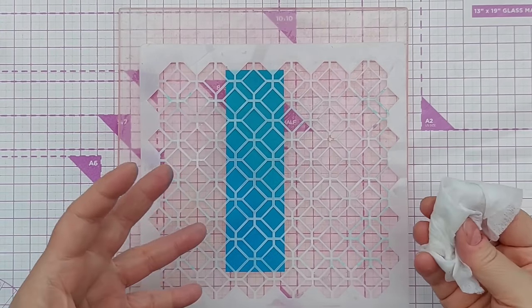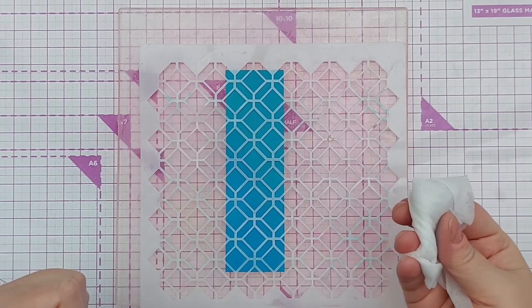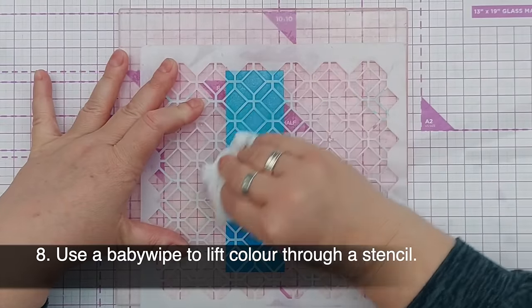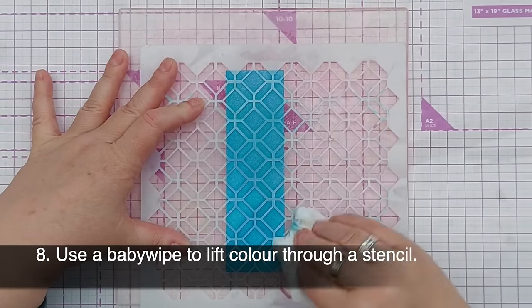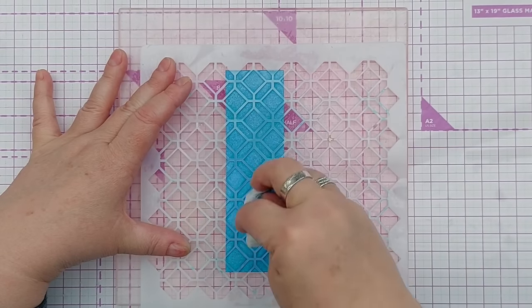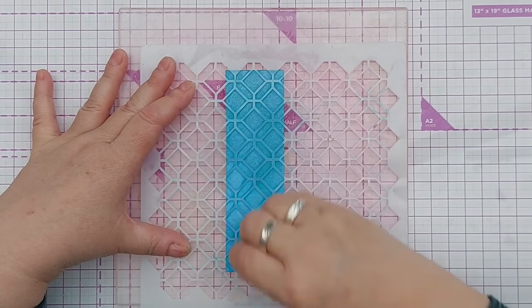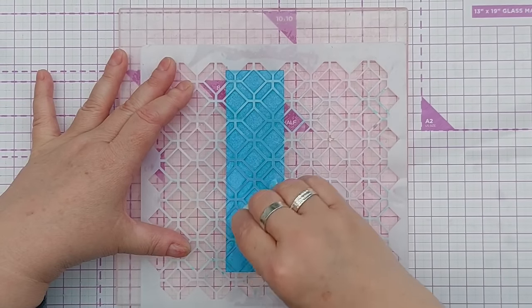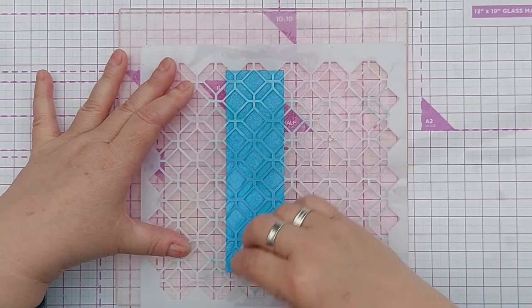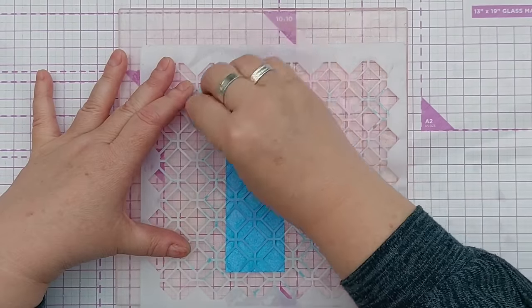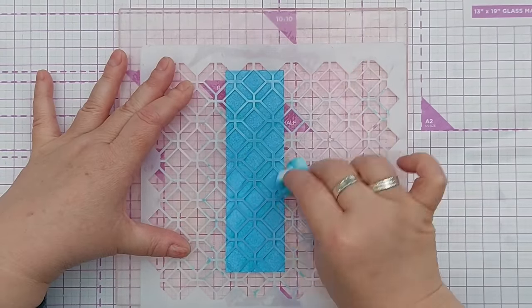If you're using mixed media paper which is quite a robust paper you can get a wet baby wipe and rub over your stencil. Don't squeeze it and get lots of water on it just gently rub over it and you can go over it a few times. This is best on mixed media or watercolour paper because it's robust and it won't peel when you rub it like that.